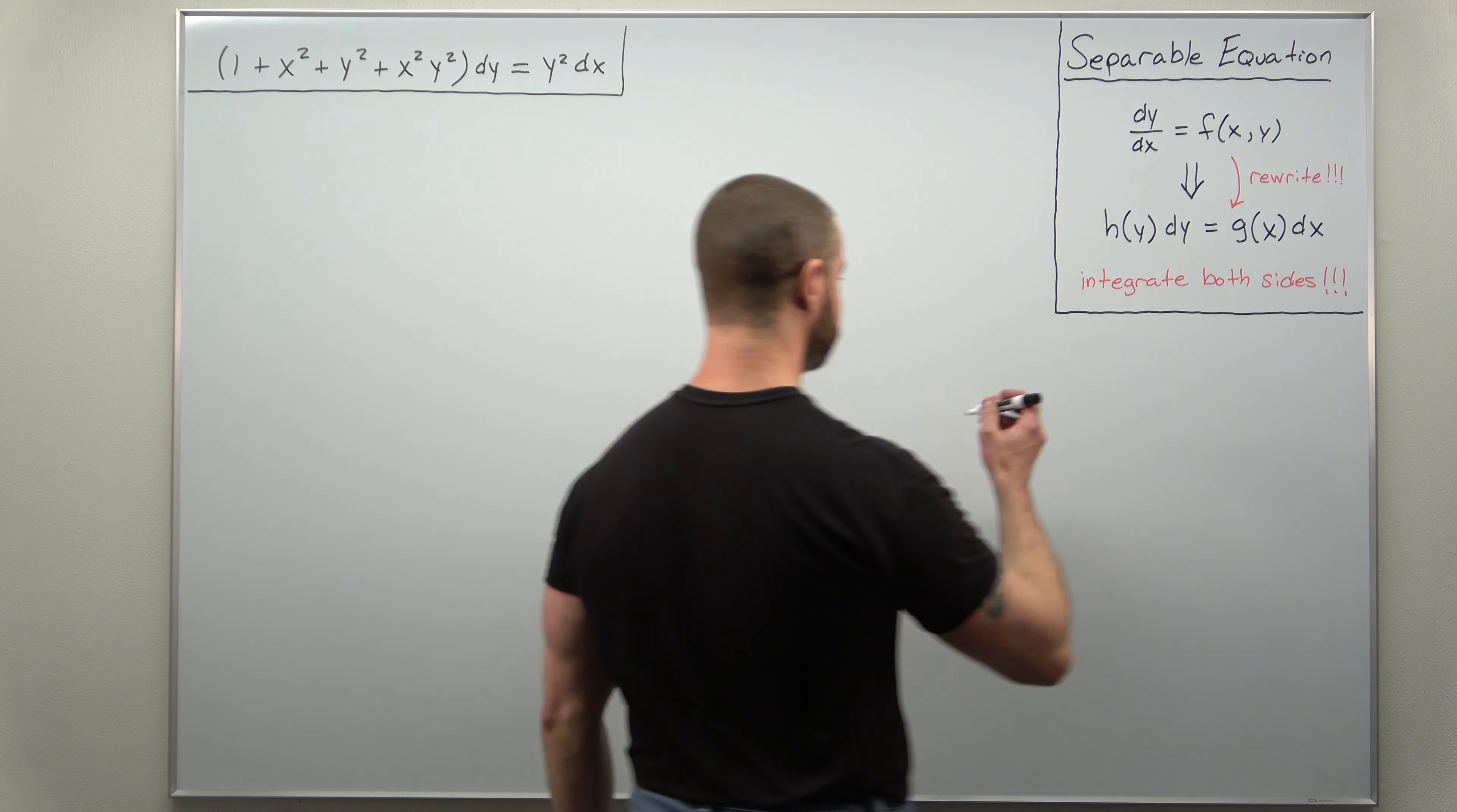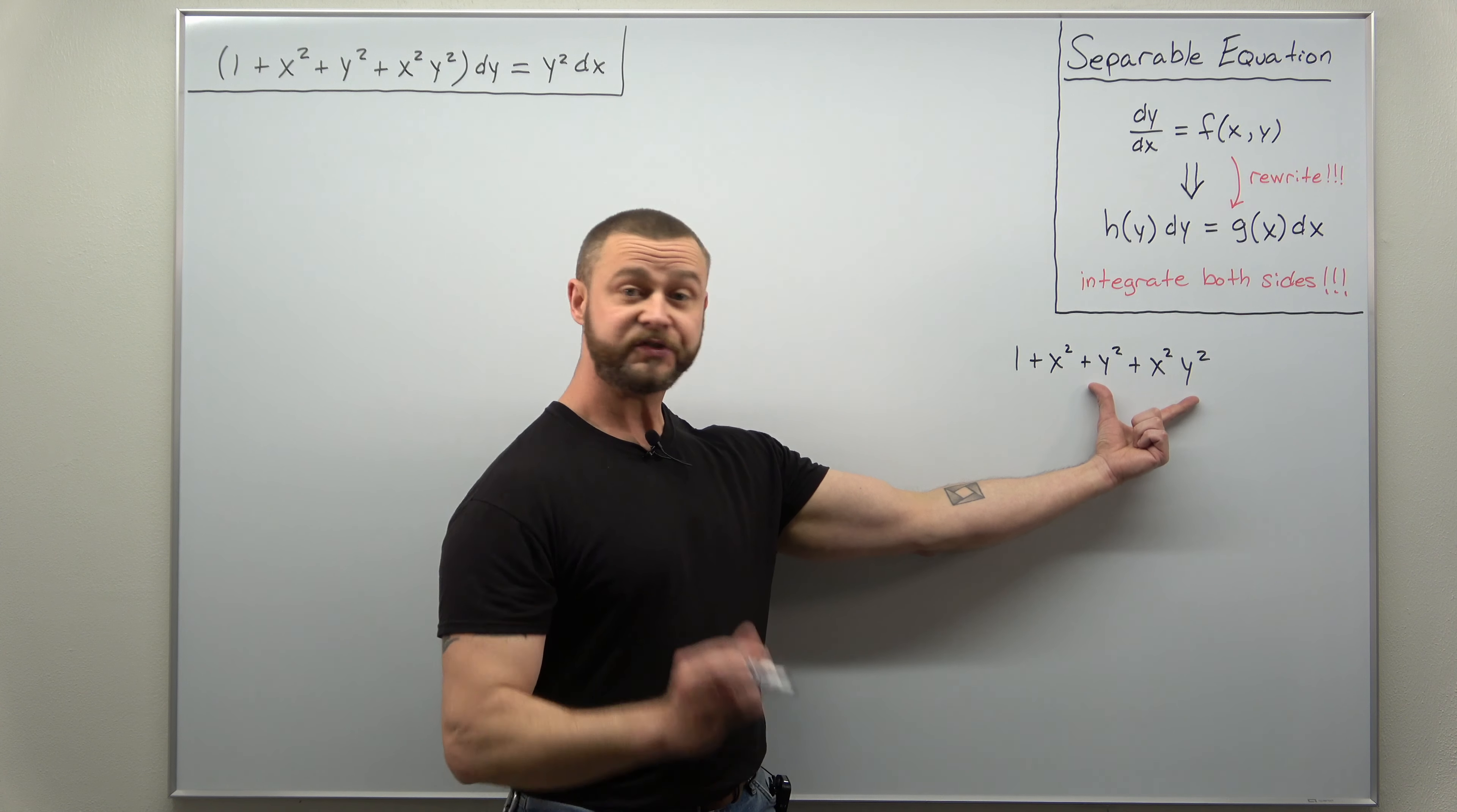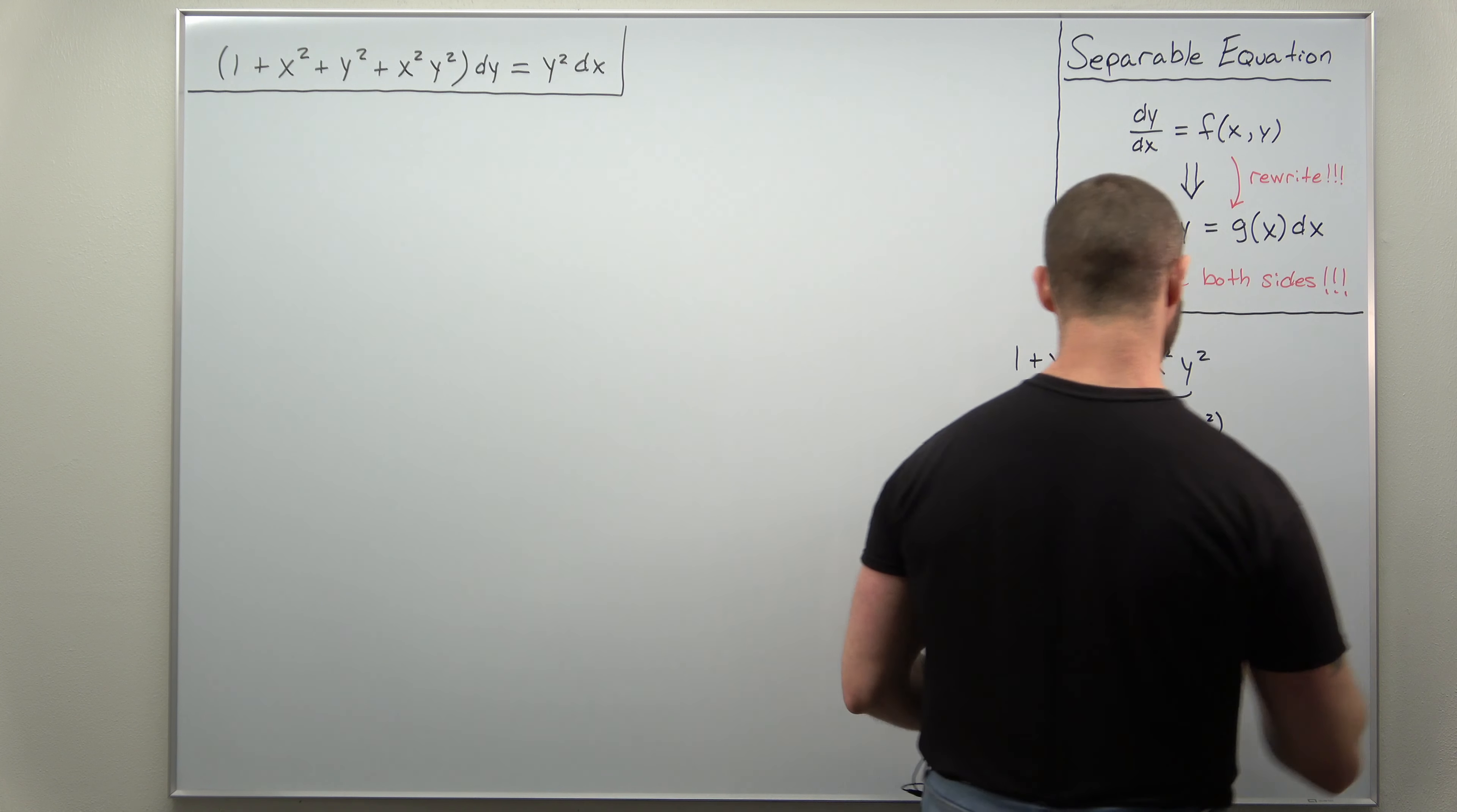We'll do that over to the side here: 1 plus x squared plus y squared plus x squared times y squared. All right, now if you think back to algebra, here we have four terms, so we might try factoring by grouping. And notice from the last two terms you can factor out y squared. So if you factor out y squared, you'll be left with another factor 1 plus x squared.